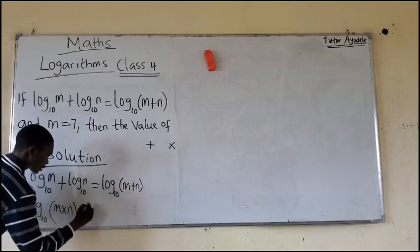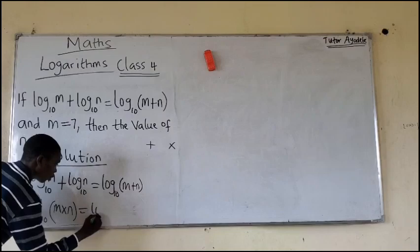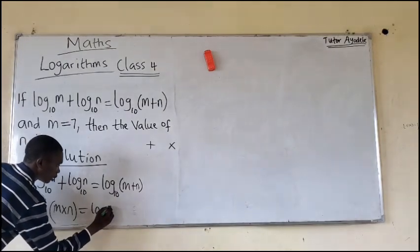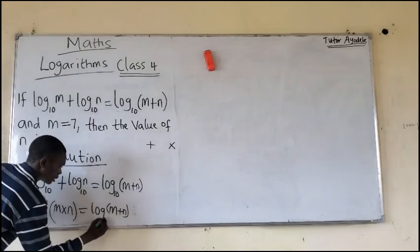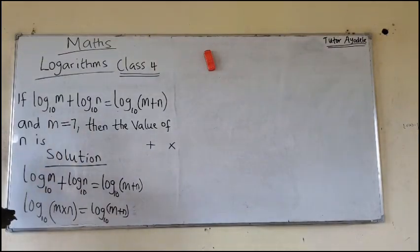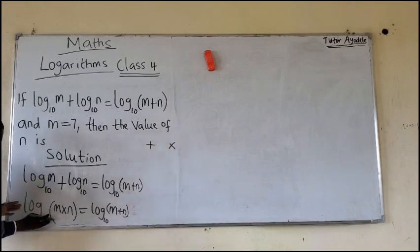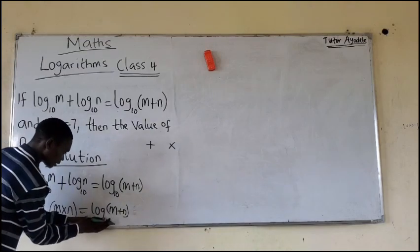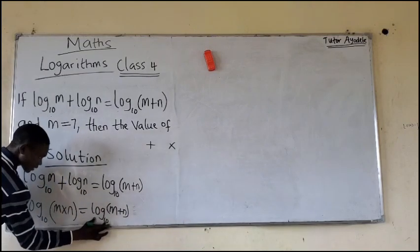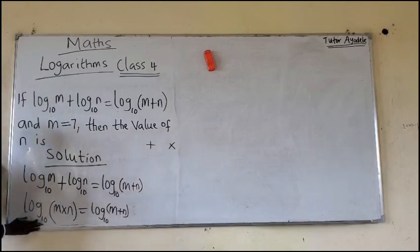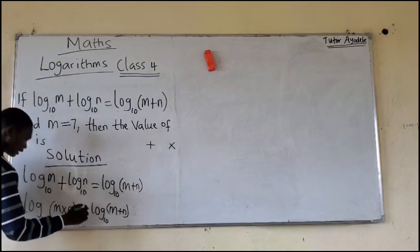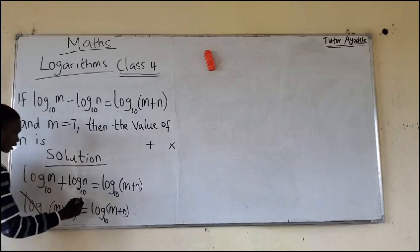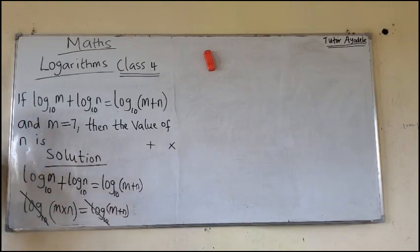It will be equals to what? Log (M plus N) base 10. Now, what is here is also the same thing as what is here. Log base 10 is here, log base 10 is here. So we can cancel this log base 10.